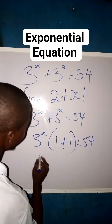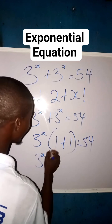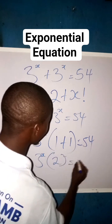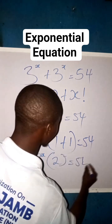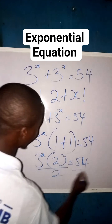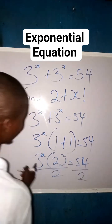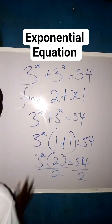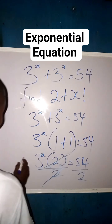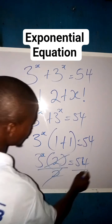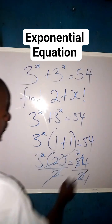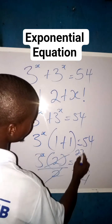So we can add up the two: 3 to the power of x, open bracket, 1 plus 1 here is 2, equals to 54. So we can divide both sides by 2, so that this 2 will free this 3 to the power of x. We cancel this one. Then 2 into 54: 2 in 4 is 2 remainder 1, that's 14, 2 in 14 is 7.